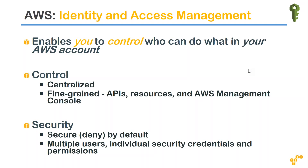Another interesting thing about IAM is it is secured by default — almost all configurations are denied. Nothing is provided by default. For example, in security groups, port 22 will not be open by default, port 80 for configuring a server will not be open by default. IAM follows the same principle: everything is denied by default whether it is for individual users or groups, and you can configure either allow or deny access.